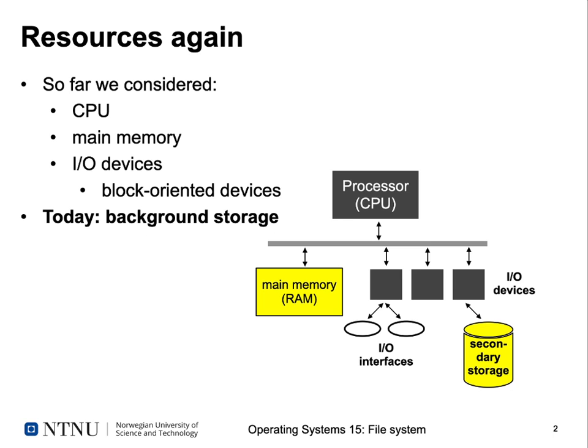So far we have considered mostly resources which we might consider internal to your computer — your CPU and your main memory. Then we had a look at I/O devices and how to handle block-oriented devices, so how to do scheduling of blocks on a disk. Today we're taking a closer look at this background storage and how this is realized. We're in the secondary storage area which is just another I/O device, but this I/O device has quite a lot of abstractions and software stacked on top of it.